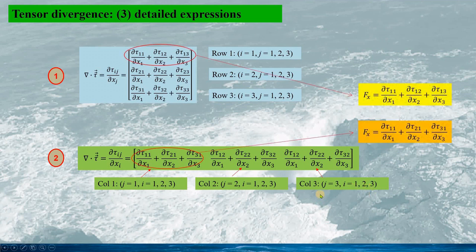Comparing the x-component fx: for the first expression we get terms involving TAU11, TAU12, and TAU13, whereas for the second expression we get TAU11, TAU21, and TAU31. This difference reflects whether we sum across the first or second index of the stress tensor.